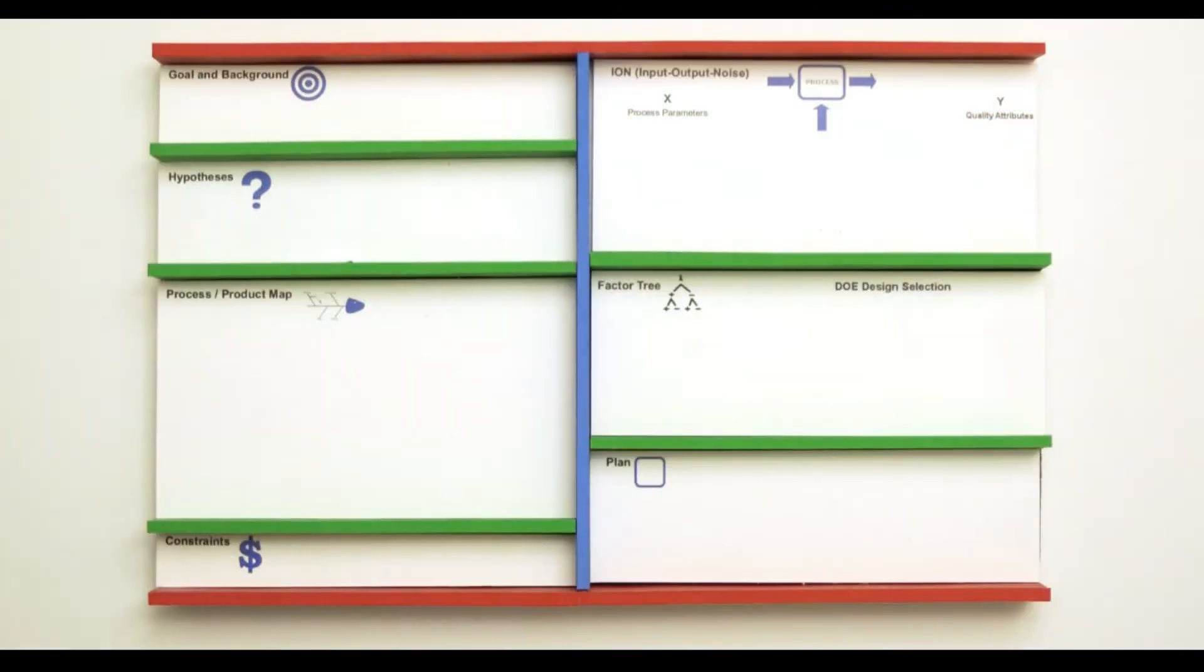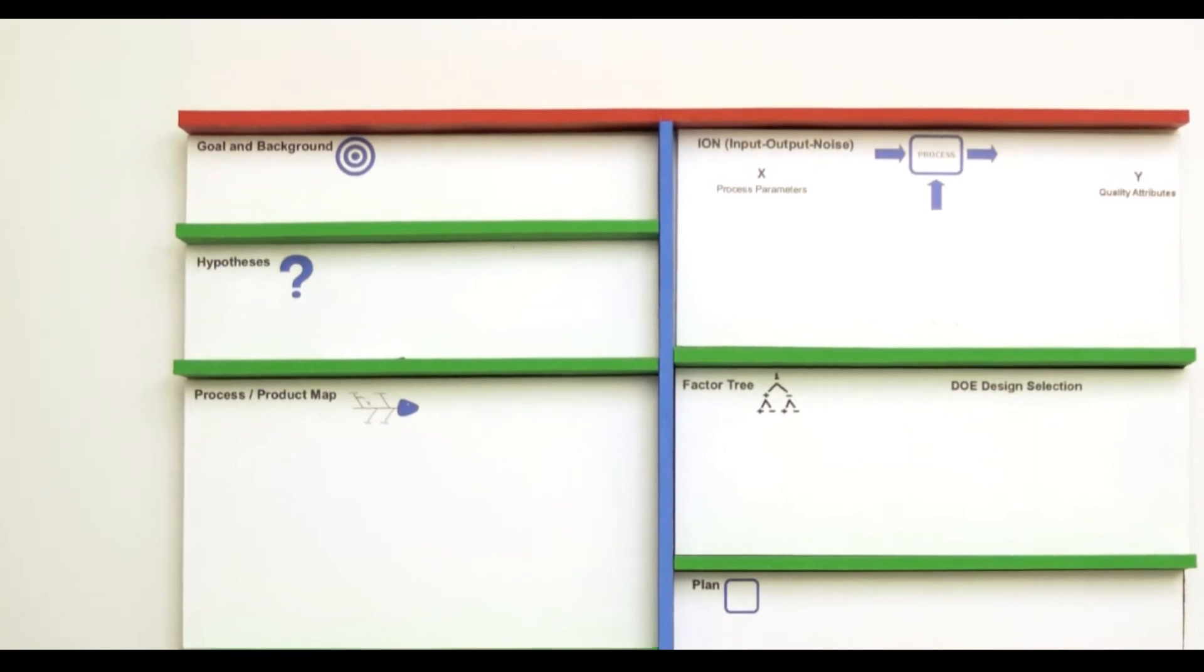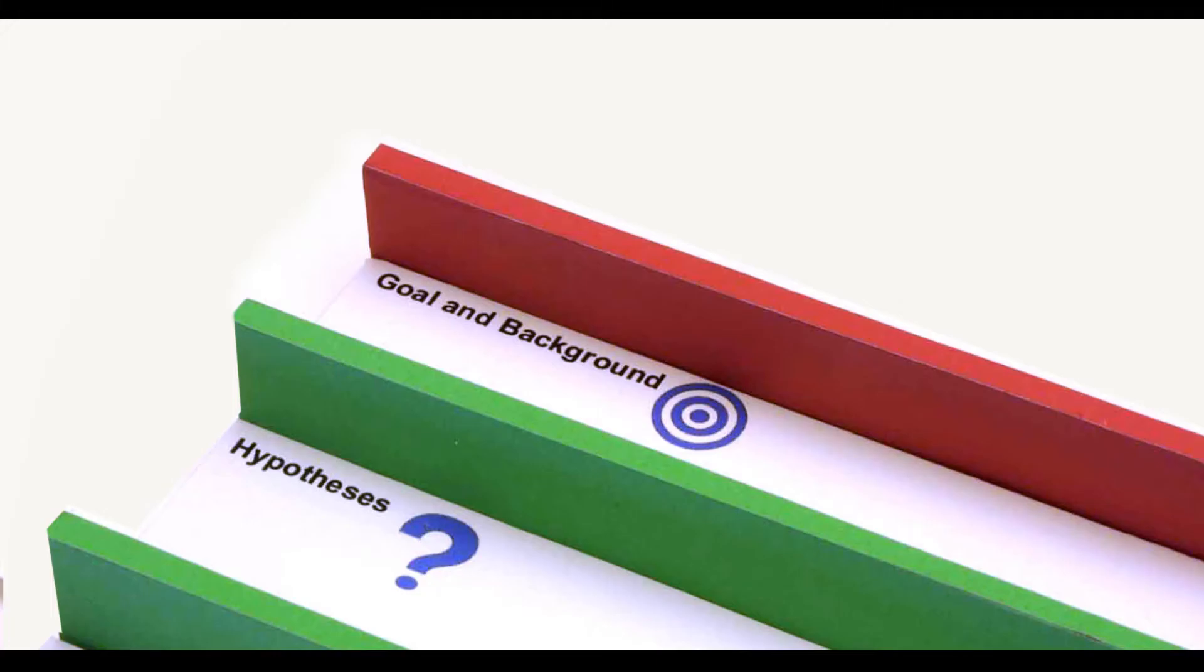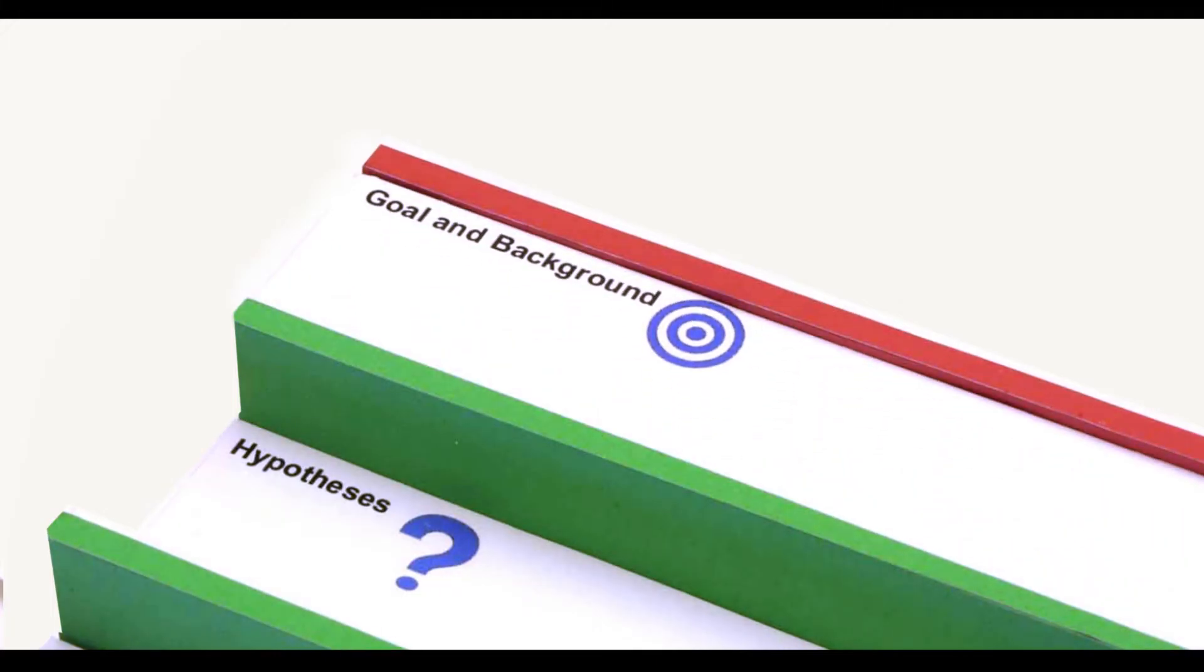What you really want to do is map them out in a pre-structured canvas. This is what we call the Experiment Canvas, the tool that helps you plan, discuss, design, and execute scientific and engineering experiments. Let's briefly go through the six building blocks.